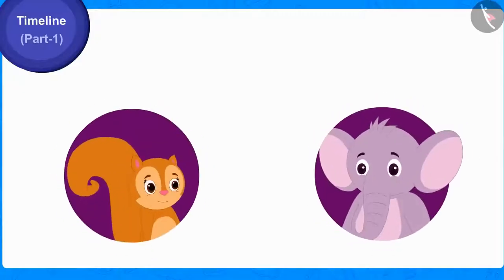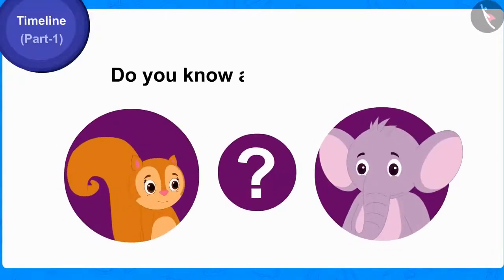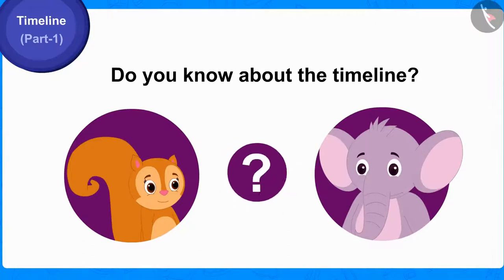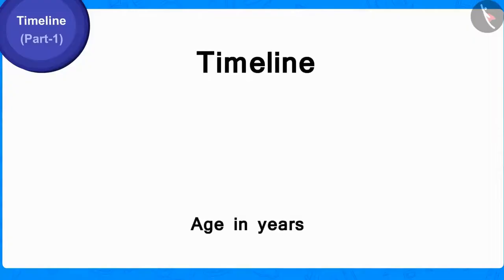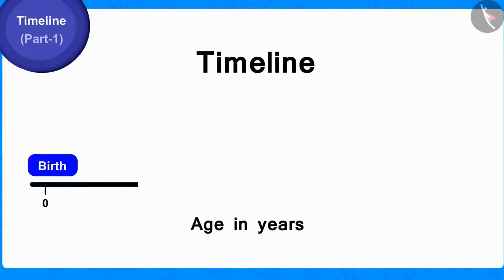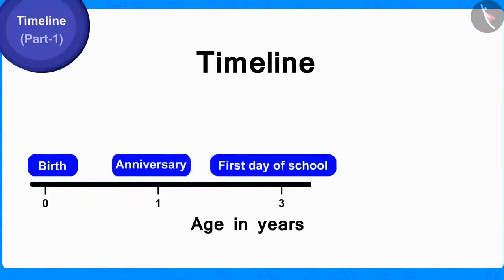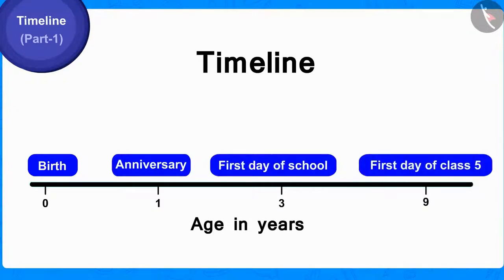Children, do you know about the timeline? That's all right. A timeline is a line on which we can depict the events that have happened in the life of any person in order of chronology.